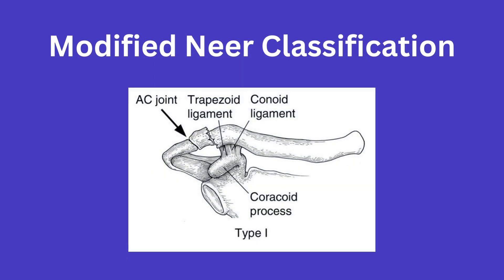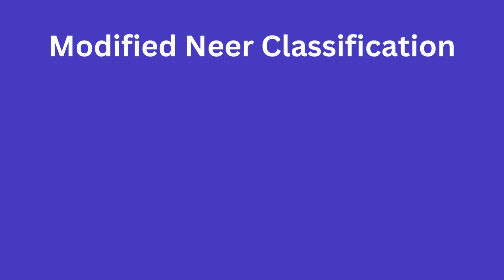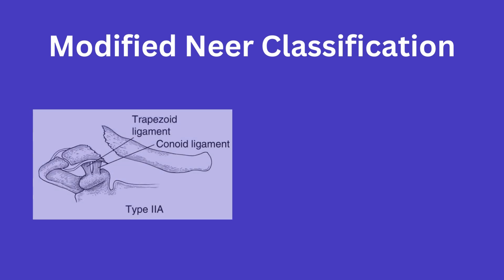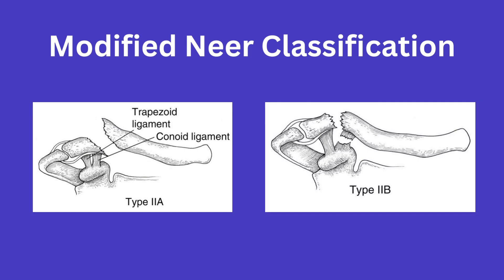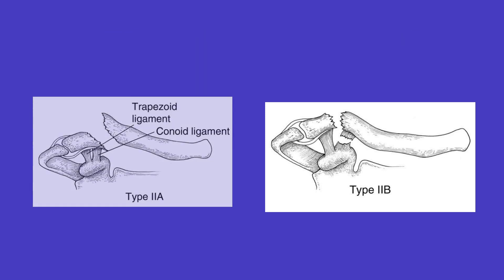Type 1 involves a fracture lateral to the coracoclavicular ligaments and is typically minimally displaced. Type 2 is split into A and B: 2A is a fracture medial to the coracoclavicular ligaments, and 2B is between the ligaments. Type 2 fractures are typically displaced and thus unstable.